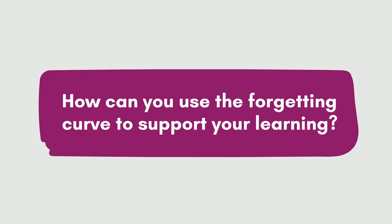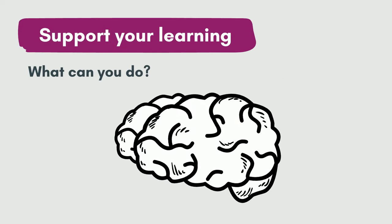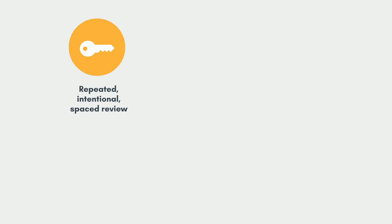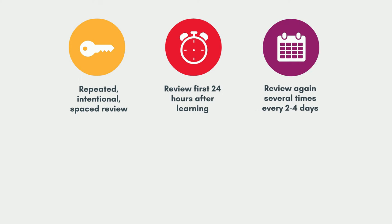How can you use the Forgetting Curve to support your learning? What strategies can you use to interrupt your forgetting and strengthen those neural pathways? Repeated, intentional, spaced review of the material is key to disrupting the forgetting curve to your advantage. Ideally, interrupt your forgetting first within 24 hours after learning the material, then again a few days later.